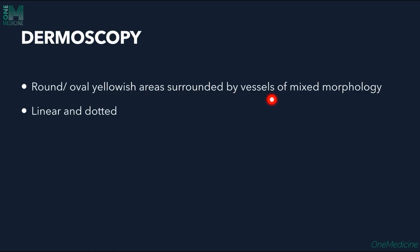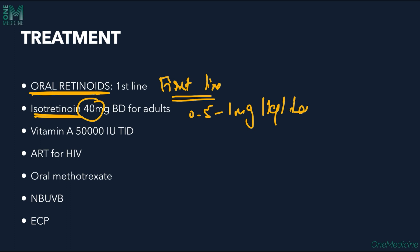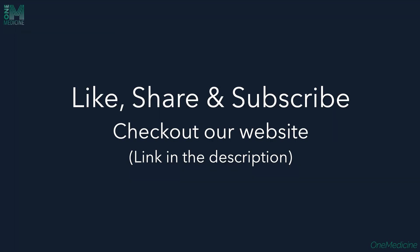Dermoscopy shows round yellowish areas surrounded by vessels of mixed morphology — dotted or linear vessels. Treatment is with oral retinoids as the first line. Isotretinoin is given at 0.5 to 1 mg per kg per day, up to 2 mg per kg per day, along with vitamin A 50,000 IU three times daily. For HIV-associated PRP, antiretroviral therapy is given. Other options include narrowband UVB and extracorporeal photochemotherapy.